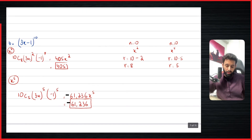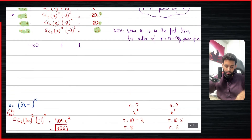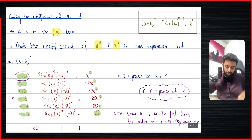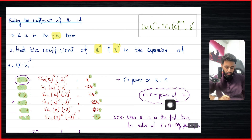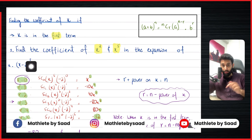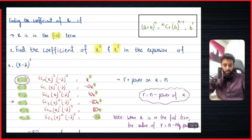I hope you've understood this concept. Long story short: if x is in the first term, the value of r can be determined by using the formula r equals n minus the required power of x. So if you want the coefficient of x squared, just do n minus 2 to get r, then plug it in to find what you need. That's it for this video. In the next video, we'll see what happens if x is in the second term. Take care, bye bye.